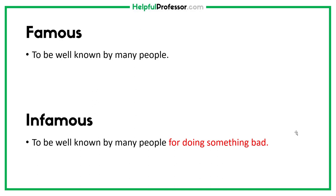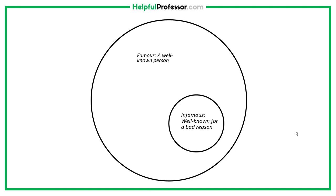Something that's really important to remember about famous and infamous is that all infamous people are also famous. If we look at this like a Venn diagram, a famous person is a well-known person, but an infamous person is a well-known person for a bad reason.